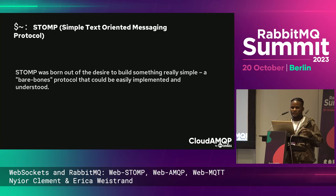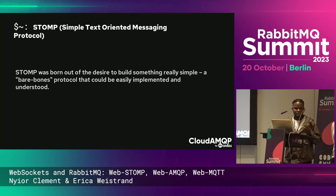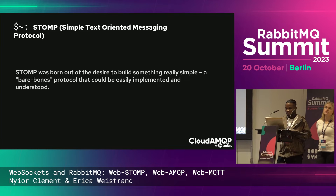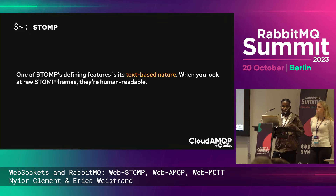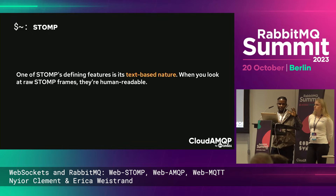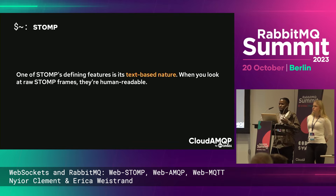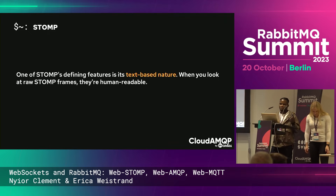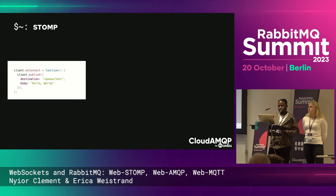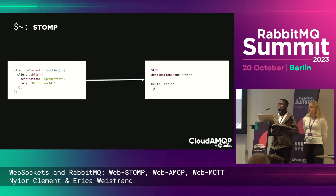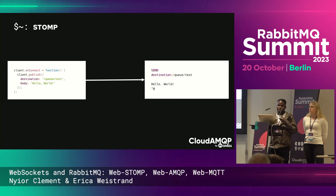STOMP as a protocol was born out of the desire to build something really simple — a bare-bones protocol that could be easily implemented and understood. One of STOMP's defining features is its text-based nature. When you look at a STOMP frame, it's pretty much like HTTP and human-readable. For example, if you publish a message like 'hello world' to a queue named 'test', the underlying STOMP frame would look very readable. Essentially, STOMP aims to provide a limited set of APIs that covers the basics of messaging quite well.